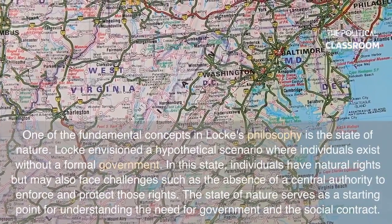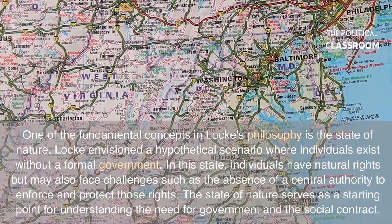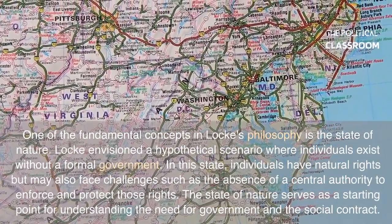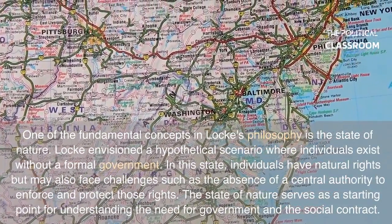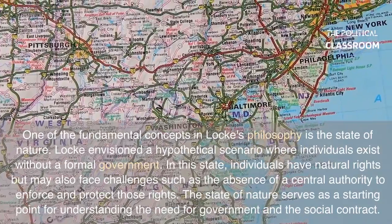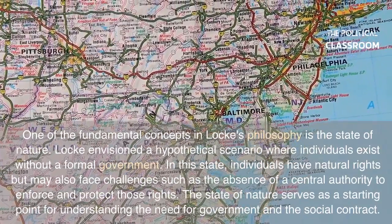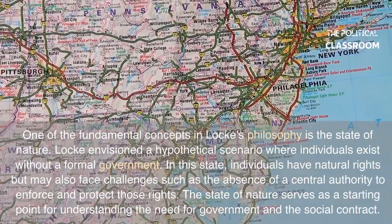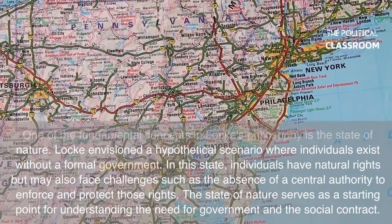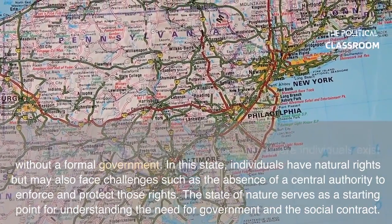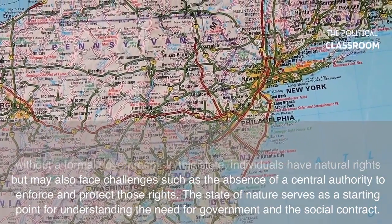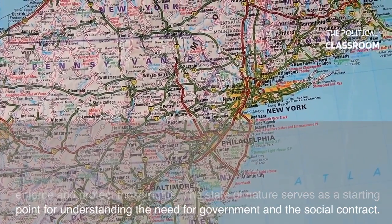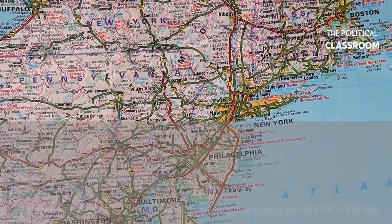One of the fundamental concepts in Locke's philosophy is the state of nature. Locke envisioned a hypothetical scenario where individuals exist without a formal government. In this state, individuals have natural rights but may also face challenges such as the absence of a central authority to enforce and protect those rights. The state of nature serves as a starting point for understanding the need for government and the social contract.